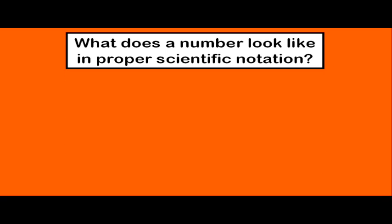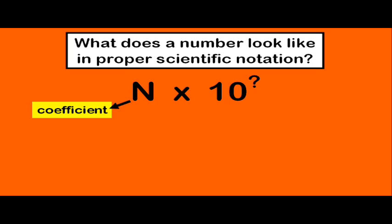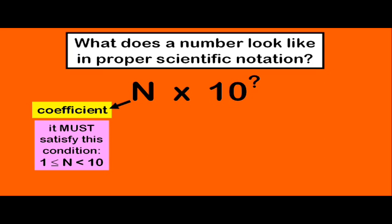So what does a number look like in proper scientific notation? It has a coefficient, followed by times ten to a particular power, an exponent, and this coefficient must satisfy the condition of being greater than or equal to one and less than ten. If your coefficient is not satisfying this condition, if it's either too large or too small, then you will not have it properly formatted in scientific notation.